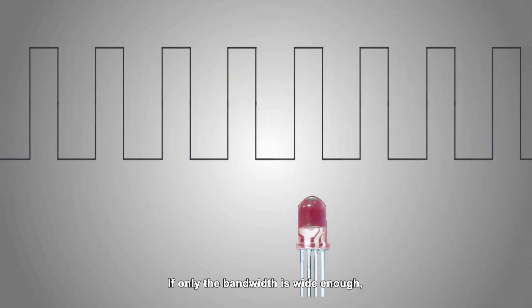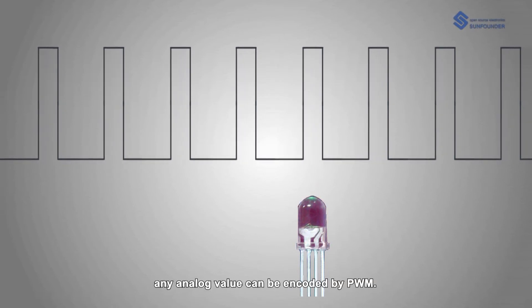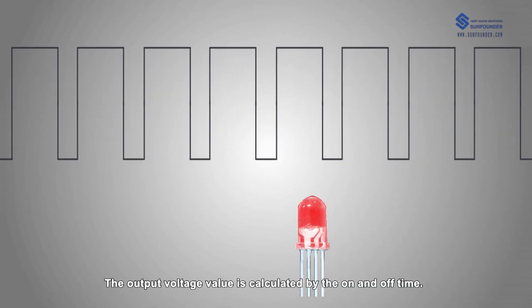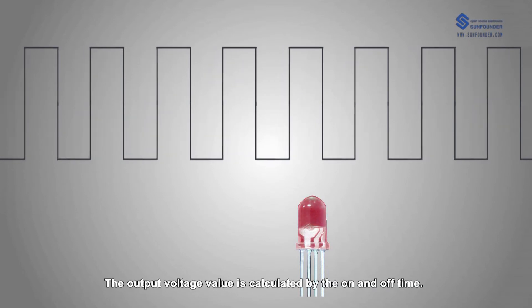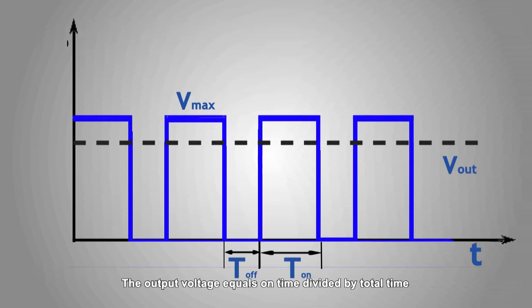If only the bandwidth is wide enough, any analog value can be encoded by PWM. The output voltage value is calculated by the on and off time. The output voltage equals on time divided by total time and then multiplied by the maximum voltage.